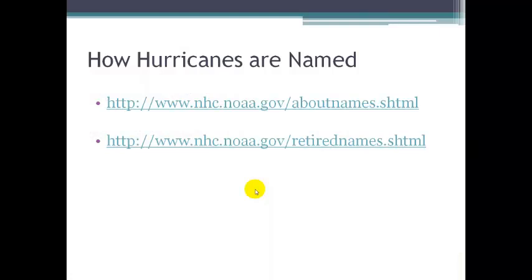Hurricane names are picked out in advance of hurricane season. The names alternate through the letters of the alphabet, beginning with A and going through Z, so the first named storm of the season starts with the letter A — this year it was Andrea. The names alternate between masculine and feminine. And if the storm develops into a hurricane, the names are retired and not used again.